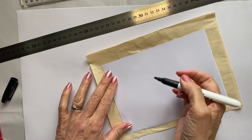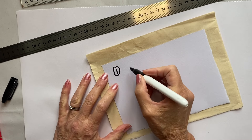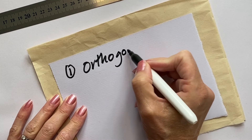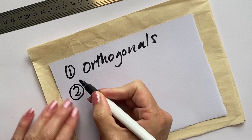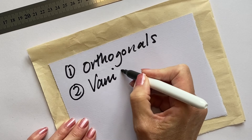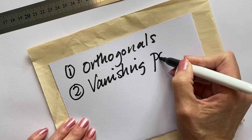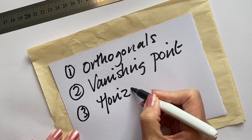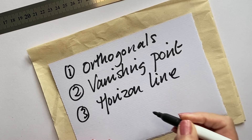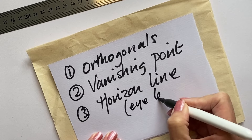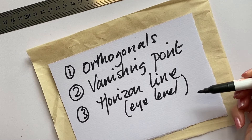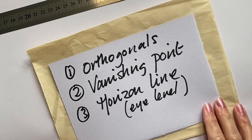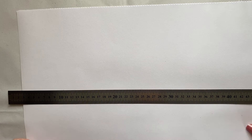There are three key terms I'm going to explain to you. First are the orthogonals. Second is the vanishing point. And third is the horizon line, sometimes called the eye level. I'm going to go through and explain each of these so you'll be very familiar with them. Let's start with the horizon line.